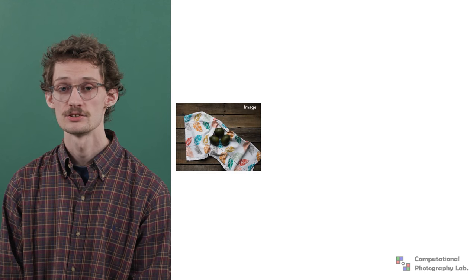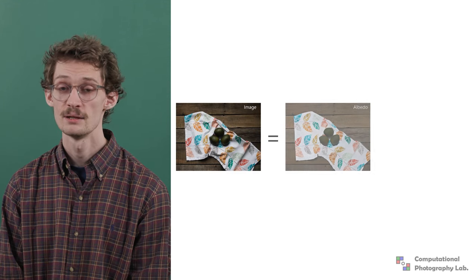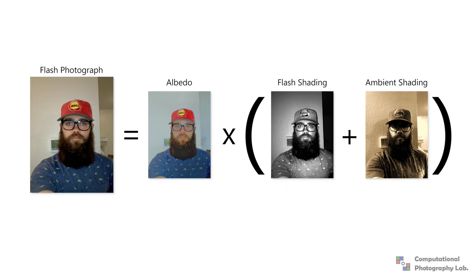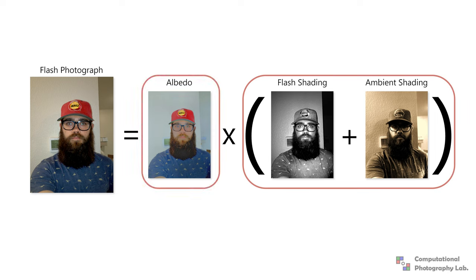We formulate these problems in the intrinsic image domain, wherein an image is represented as a pixel-wise multiplication between albedo and shading. Using this image model allows us to represent the ambient and flash illuminations with two separate shading layers, but with a common albedo.